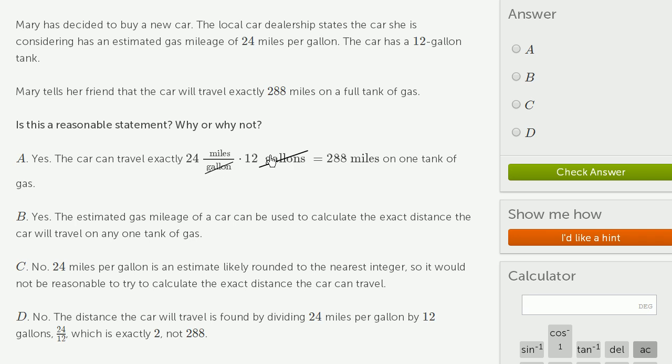the gallon in the numerator, gallon in the denominator, cancel out. And we're left with 24 times 12, which is 288. And the units we're left with is miles. 288 miles on one tank of gas.